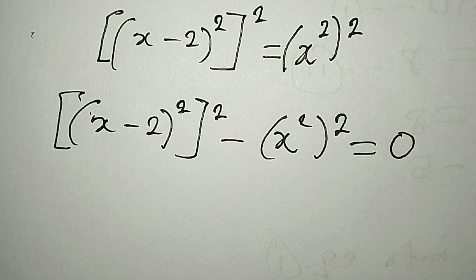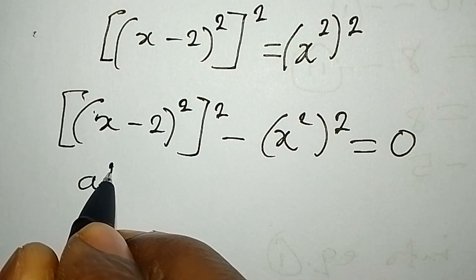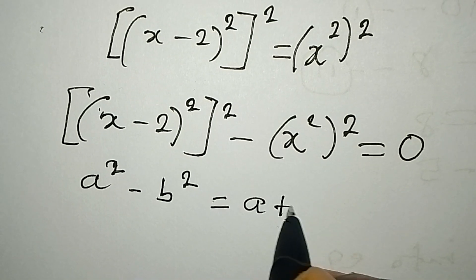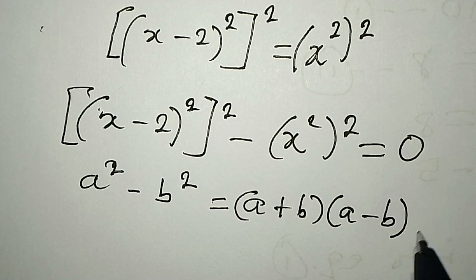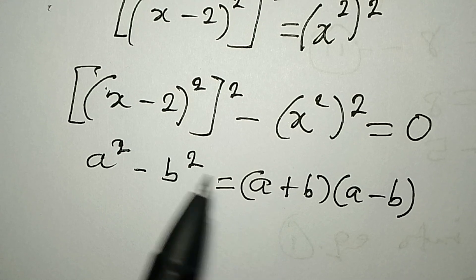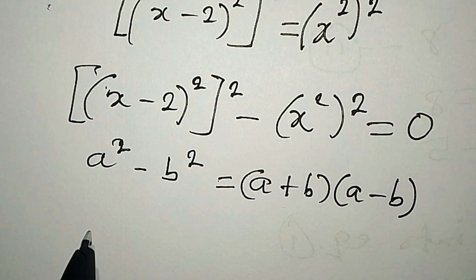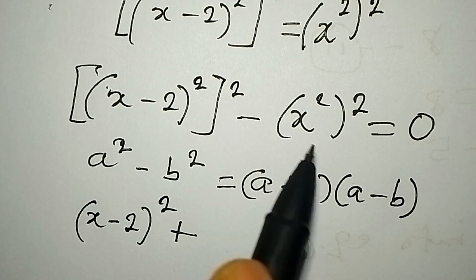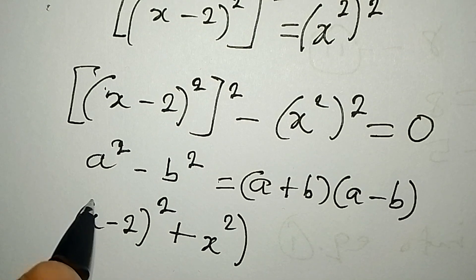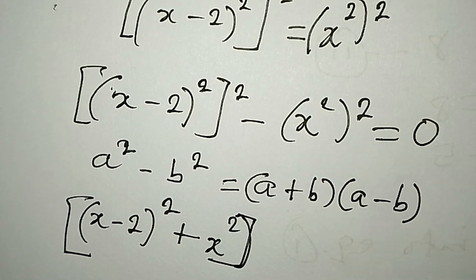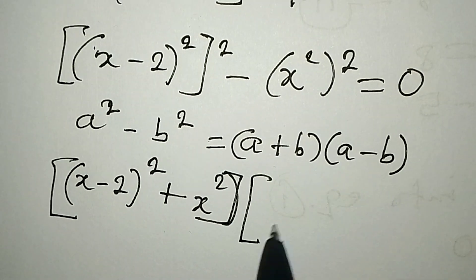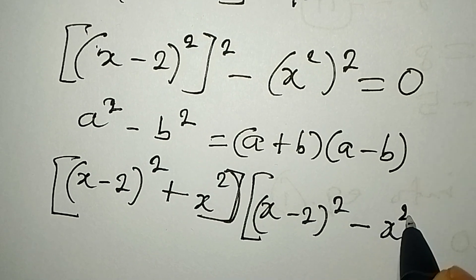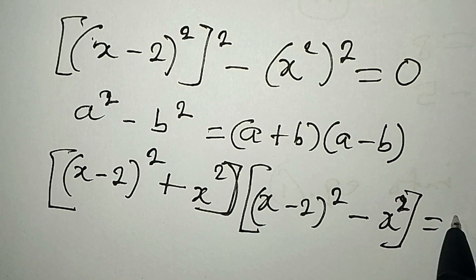From here I can apply the difference of two squares. If you have a² minus b², this equals (a + b)(a − b). So our a is (x minus 2) squared, and our b is x squared. Applying this, in the first bracket we have (x minus 2)² plus x², and in the second bracket we have (x minus 2)² minus x², all equal to zero.